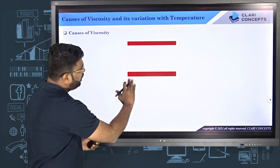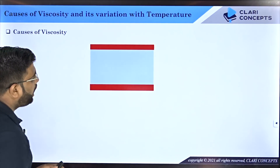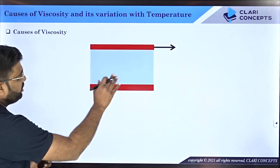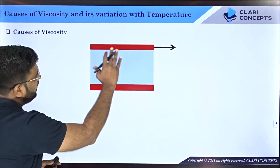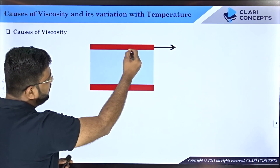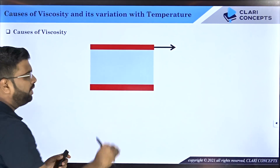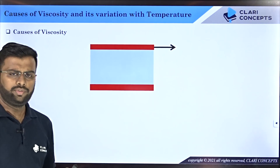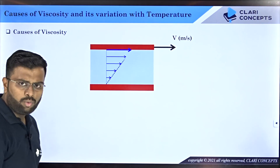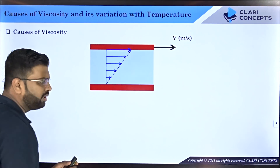Let's say I have two different plates — one is a fixed plate and another is a moving plate — and I have water, or any fluid, filled between these two plates. If I pull the upper plate keeping the lower one stationary, all the fluid layers in between will come into motion. The topmost layer in touch with the upper plate will move at the highest velocity, and the bottommost layer in touch with the fixed plate will be at zero velocity, giving us a linear velocity profile.